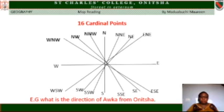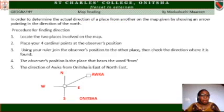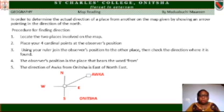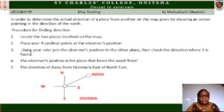Let us now find the direction of Oka from Onitsha. In order to determine the actual direction of a place from another on a map, use an arrow pointing in the direction of north. Procedure: locate the two places — Oka and Onitsha. Place your four cardinal points at the observer's position, which is Onitsha. Use your ruler to join the observer's position to the other place, then check the direction. The direction of Oka from Onitsha is East of North-East.